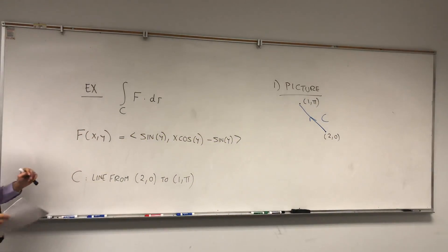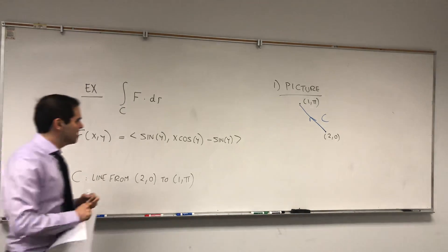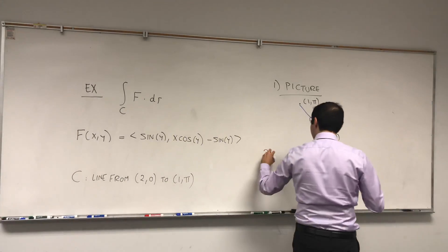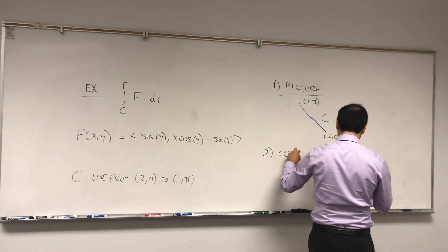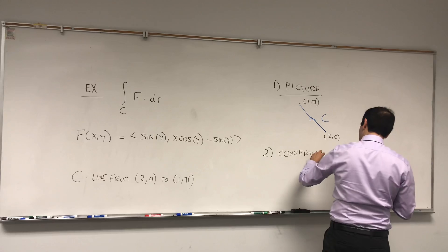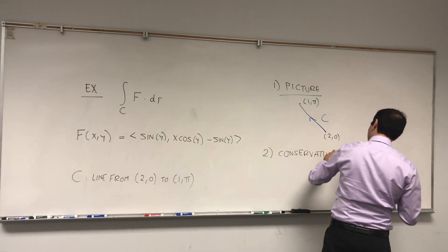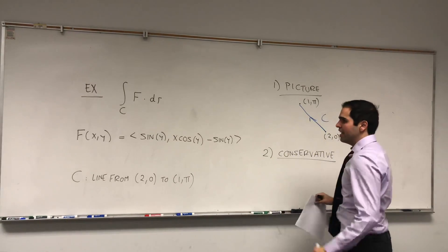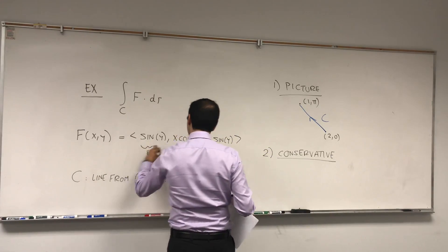And then what we would like to do first is check if F is conservative. For this you have to check if a certain equality holds. Namely, if this is P and this is Q,